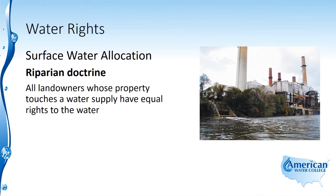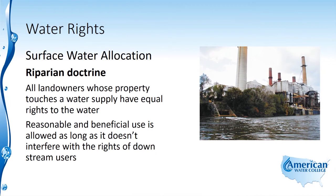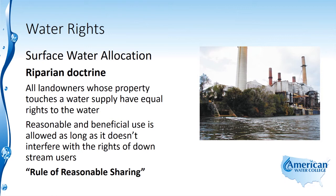Under the riparian doctrine, all landowners whose property touches a water supply have equal rights to the water. Reasonable and beneficial use is allowed as long as it doesn't interfere with the rights of downstream users. The riparian doctrine is also known as the rule of reasonable sharing — anyone with property touching the water can use it for a beneficial use, so long as they're not interfering with downstream users.